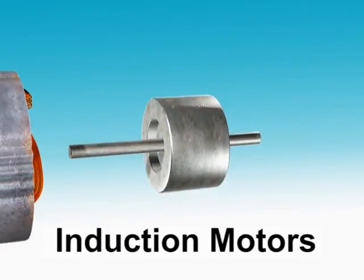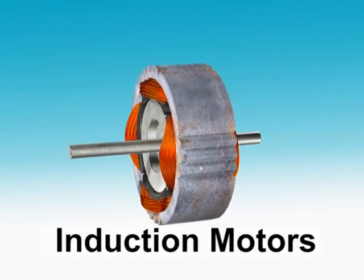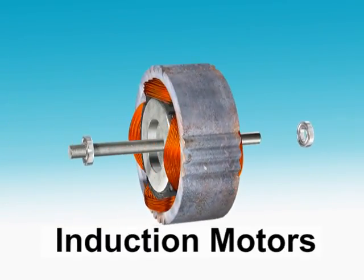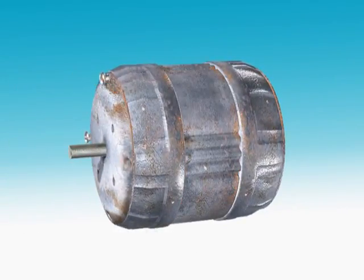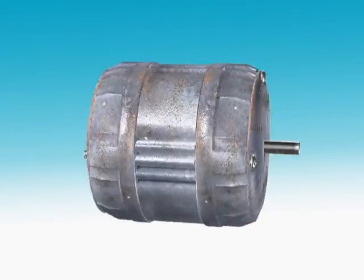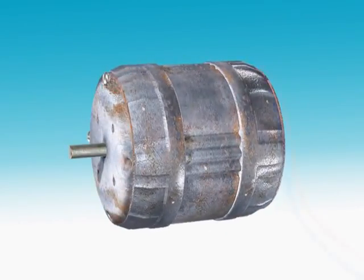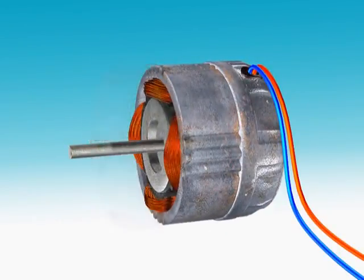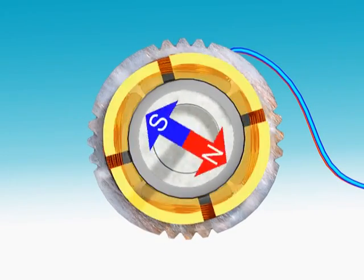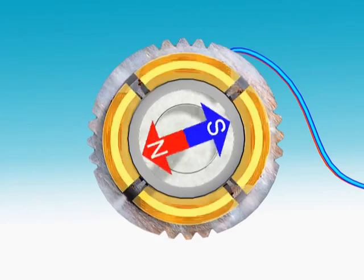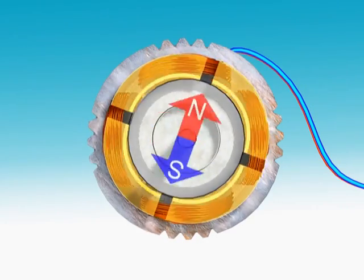Induction motors: A rotating magnetic field is produced by means of two single phase currents. A metallic rotor placed inside the rotating magnetic field starts rotating due to large eddy currents produced in it. These motors are commonly used in fans.